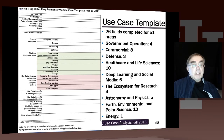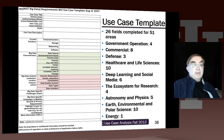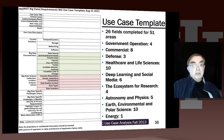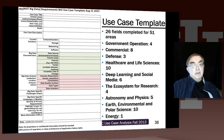A key part — maybe the major contribution of the whole use case working group — was the development of a one-page Word document: the use case template. The empty template was one page; the full completed templates could be many pages. This template defines what we collect for each use case.